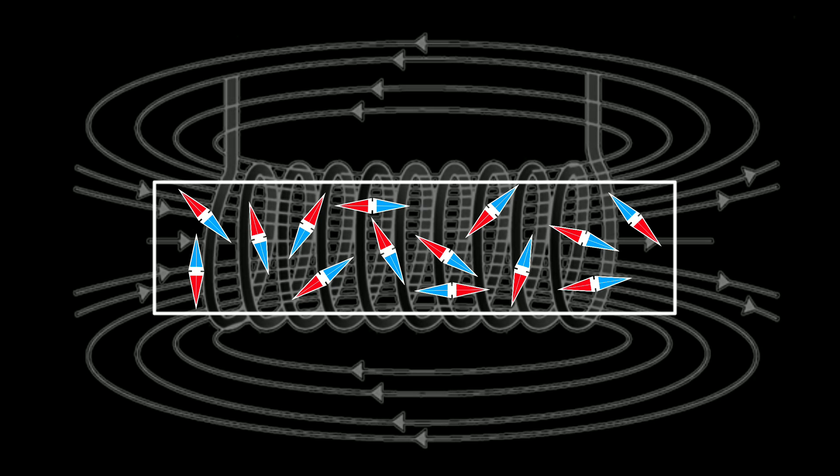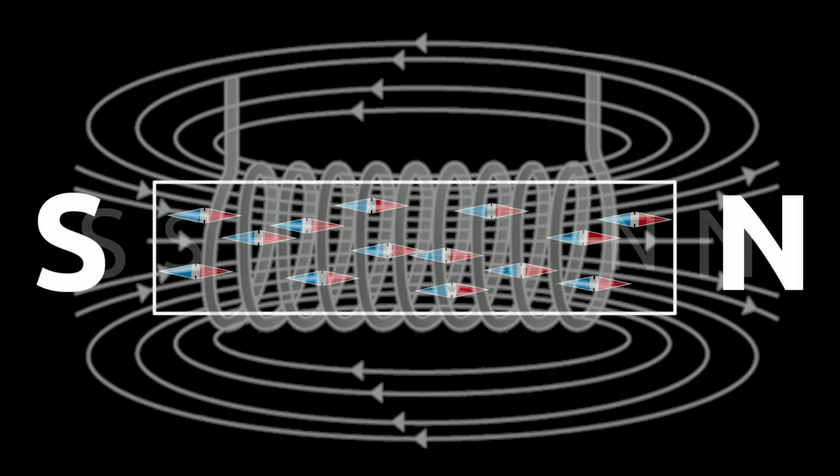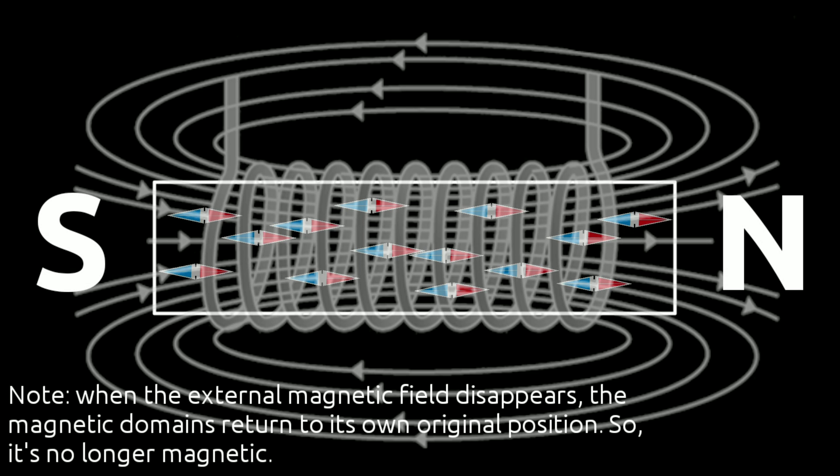However, in the presence of an external magnetic field, these domains align with each other, so the ferromagnetic iron bar becomes magnetized. The magnetized iron bar and the external magnetic field align with each other, making the overall magnetic field much stronger.